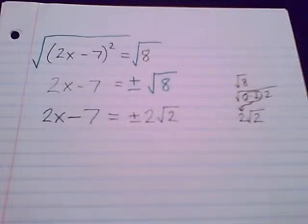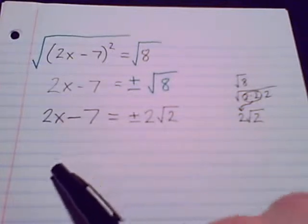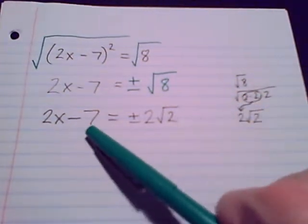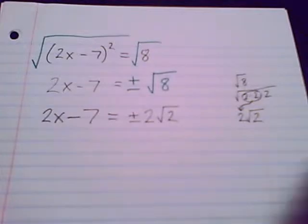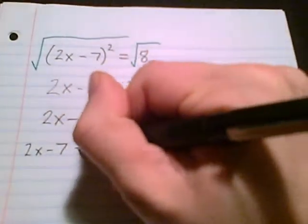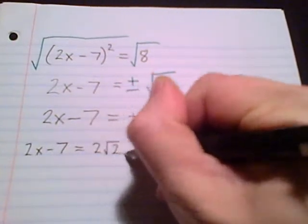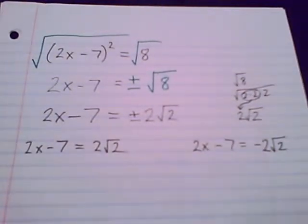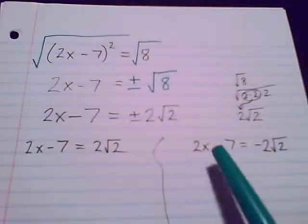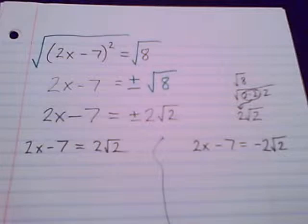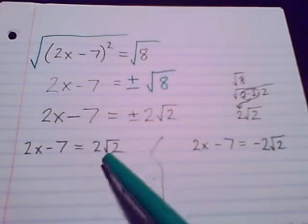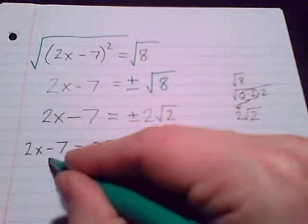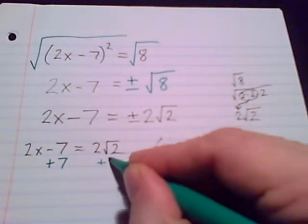We definitely cannot stop right now — this is an equation we're trying to solve, and we're trying to isolate x. So we've got to keep going with this plus or minus symbol. It's time to split this up into two equations: 2x minus 7 equals positive 2 radical 2, and 2x minus 7 equals negative 2 radical 2. They are still linear because x has an exponent of 1. We do have radicals in there, but they're just irrational numbers — they'll just make it a little trickier when we try to combine like terms.